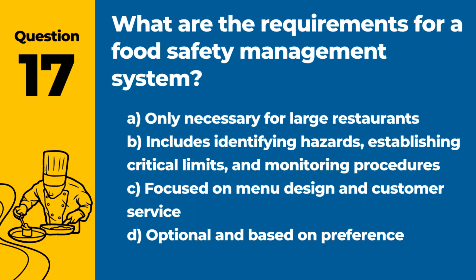Question 17. What are the requirements for a food safety management system? Answer: B. Includes identifying hazards, establishing critical limits, and monitoring procedures. A food safety management system is essential for controlling food safety risks.